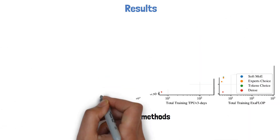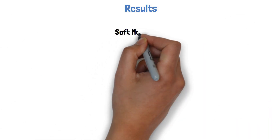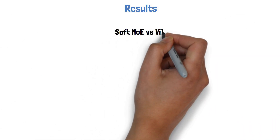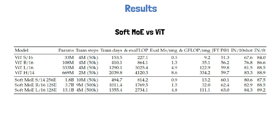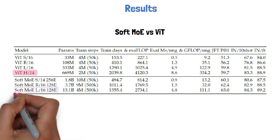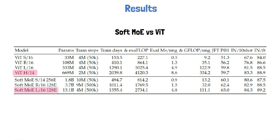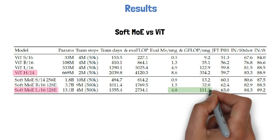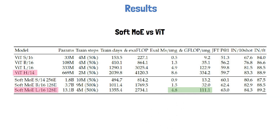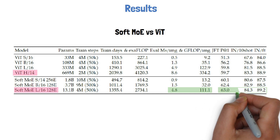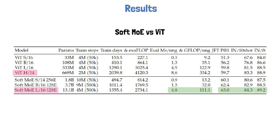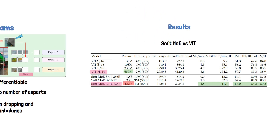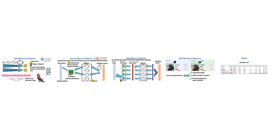In order to dive deeper into the comparison of Soft MOE vs visual transformers, the paper includes the following table. Looking at the largest model of both methods, a noticeable achievement is that the inference time is much faster with Soft MOE, while results are slightly better. However, the memory footprint of running Soft MOE seems significantly larger. Thank you for watching and I hope to see you again in the next video.